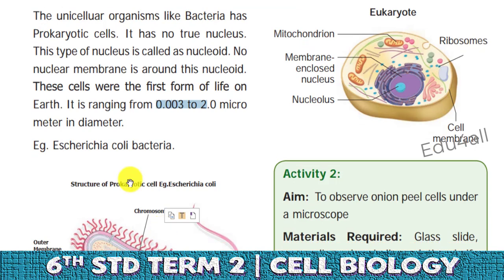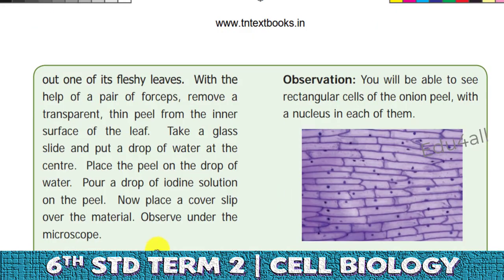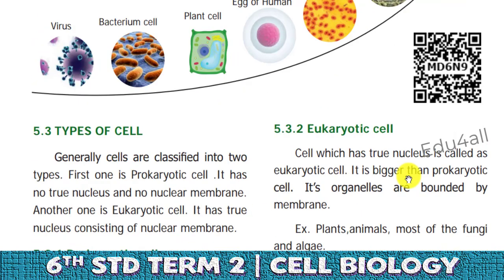An example is E. coli, commonly called Escherichia coli. Inside the cytoplasm we have chromosomes, but they are never bounded by a nucleus-like structure. So these are called prokaryotic organisms.